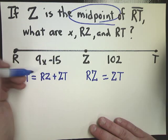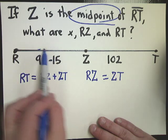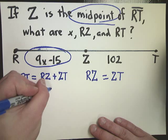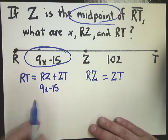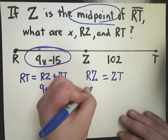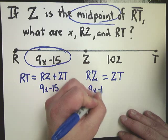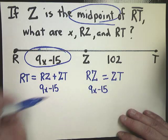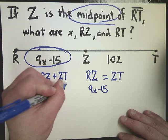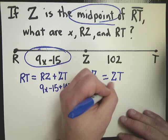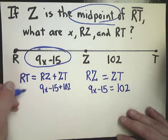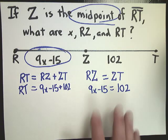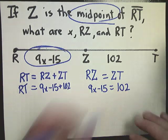Now if I know that RZ is 9x minus 15, which is why it's written right there, I need to mark every time I see RZ, I need to have 9x minus 15 under it. Similarly, if I have ZT is equal to 102, I need to set each problem up so that it's equal to 102. Now in the first one, I still don't know what RT is, but I might know it in a minute. But this one, I have enough information to go ahead and solve.